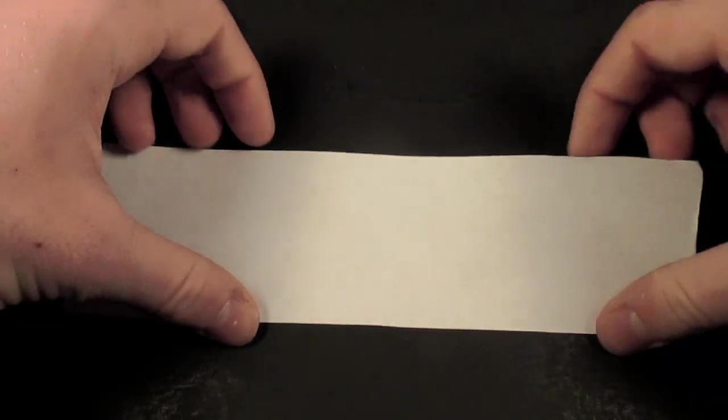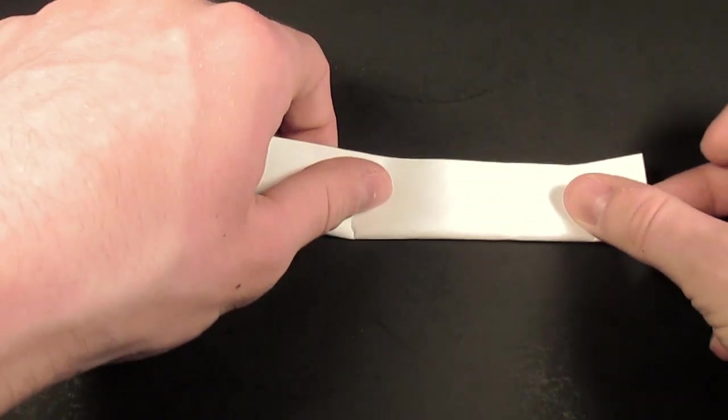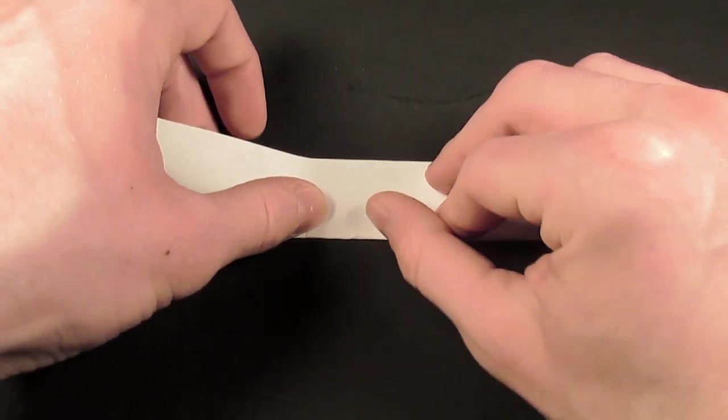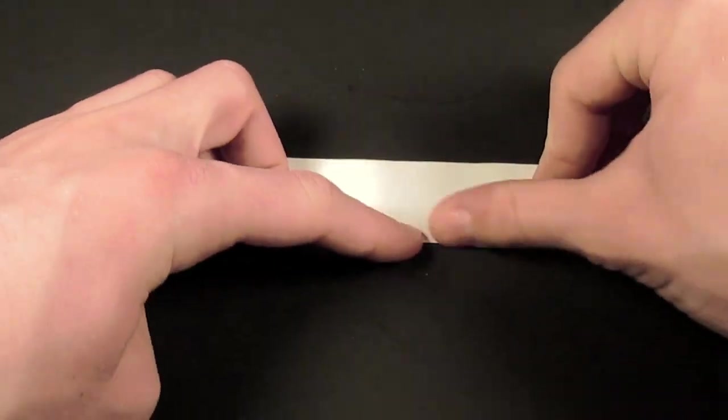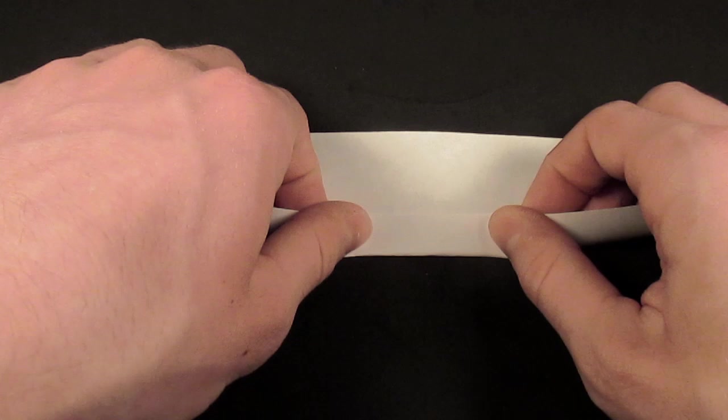Okay, so we're going to start with that rectangular strip of paper, and we're going to fold in half. Then let's unfold, and we'll fold both edges into the center.